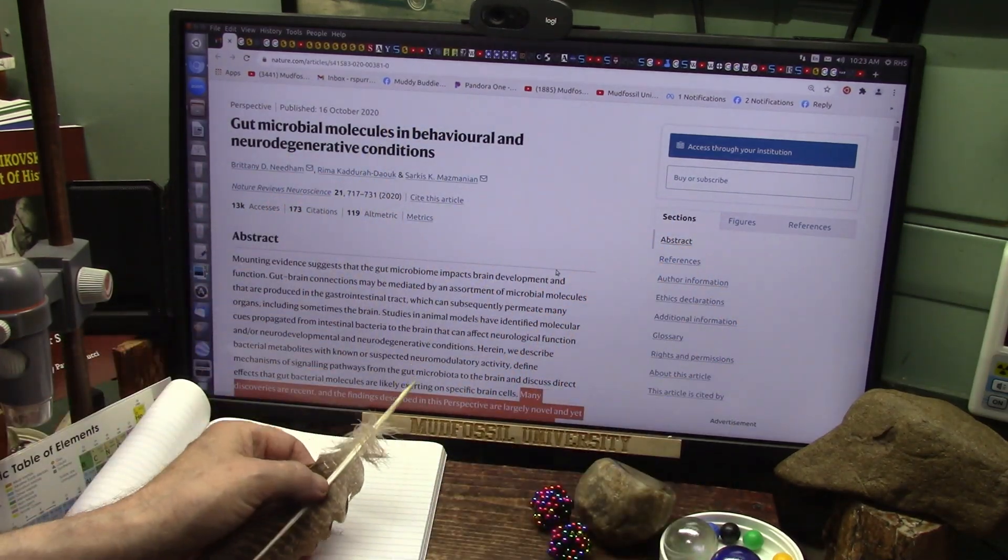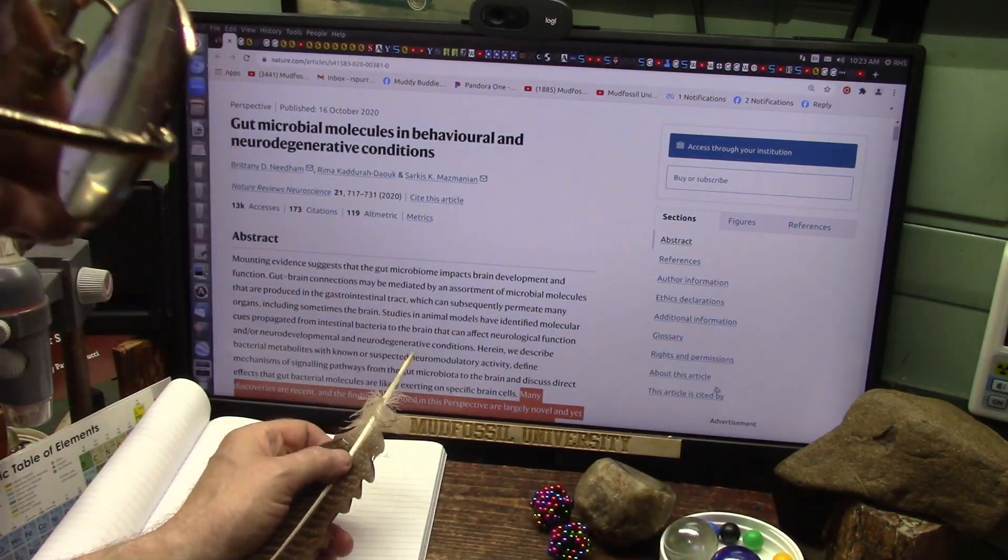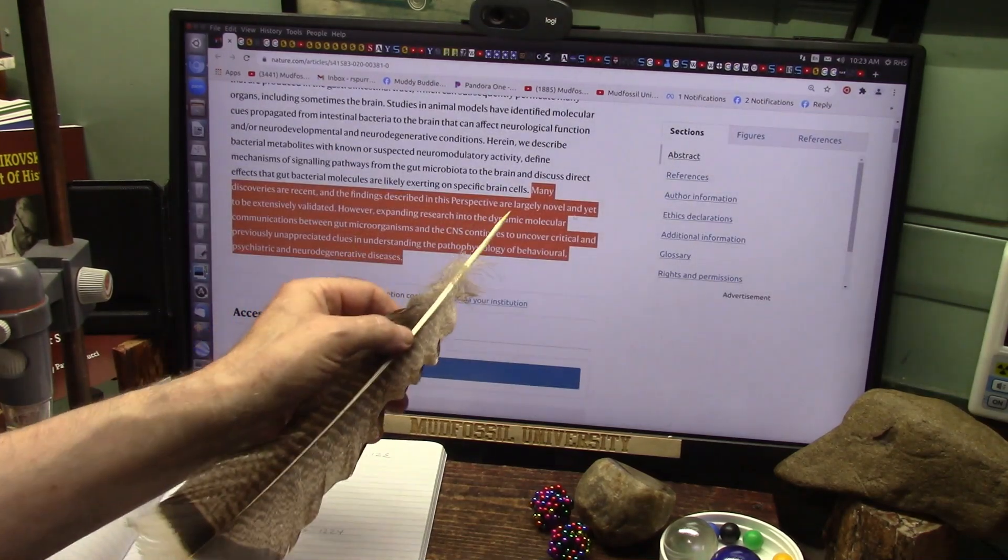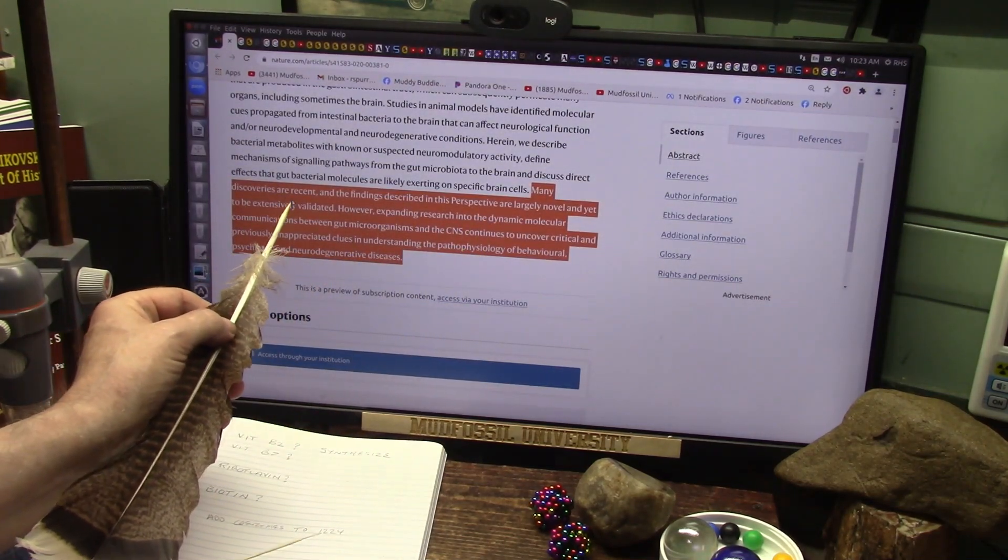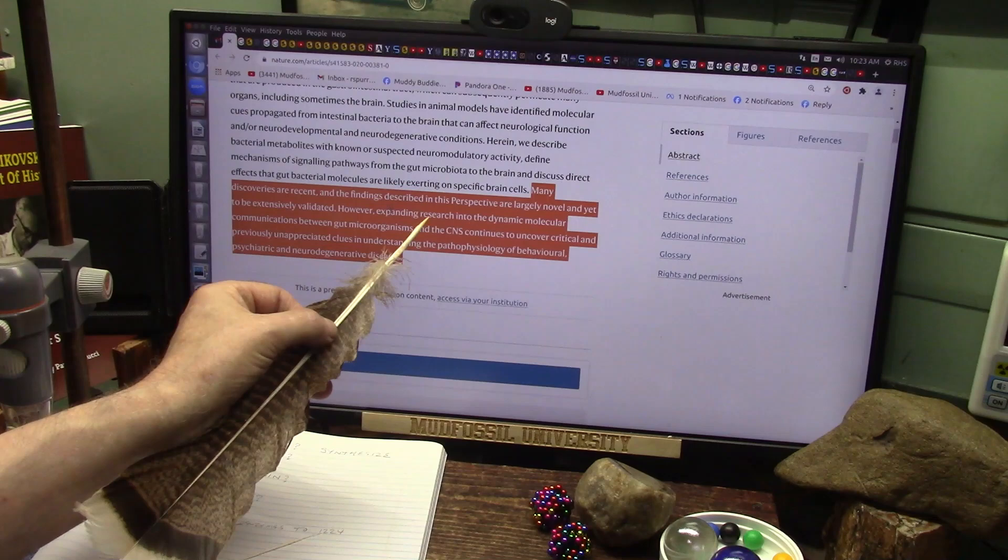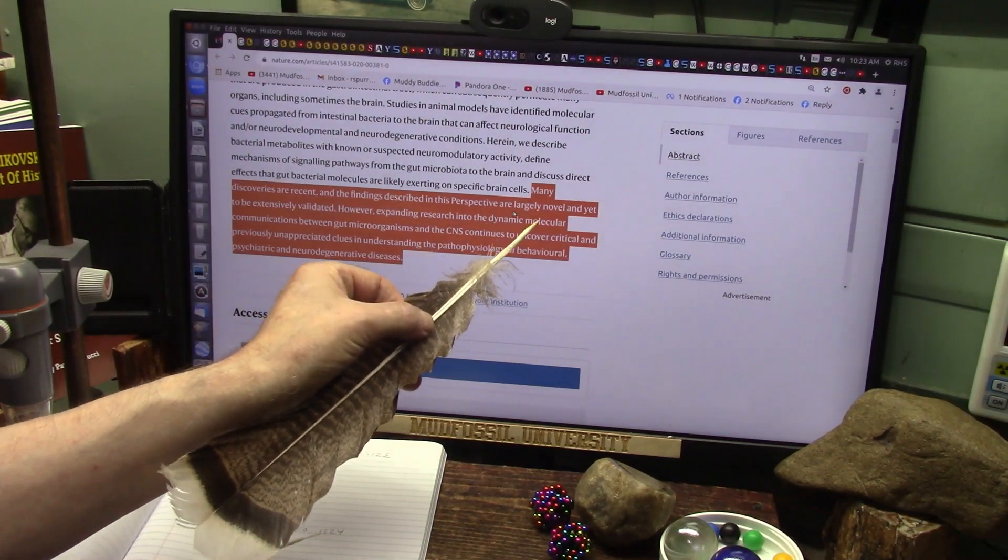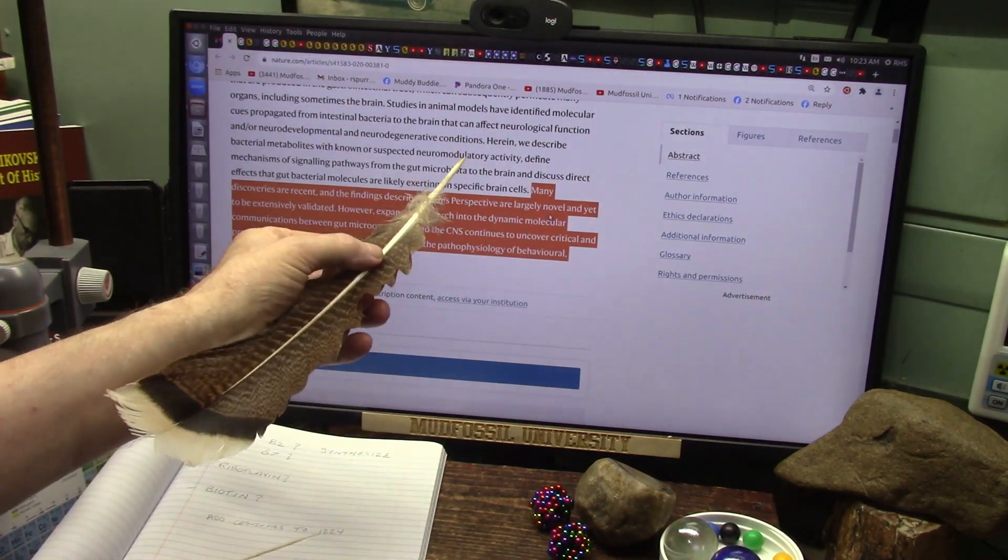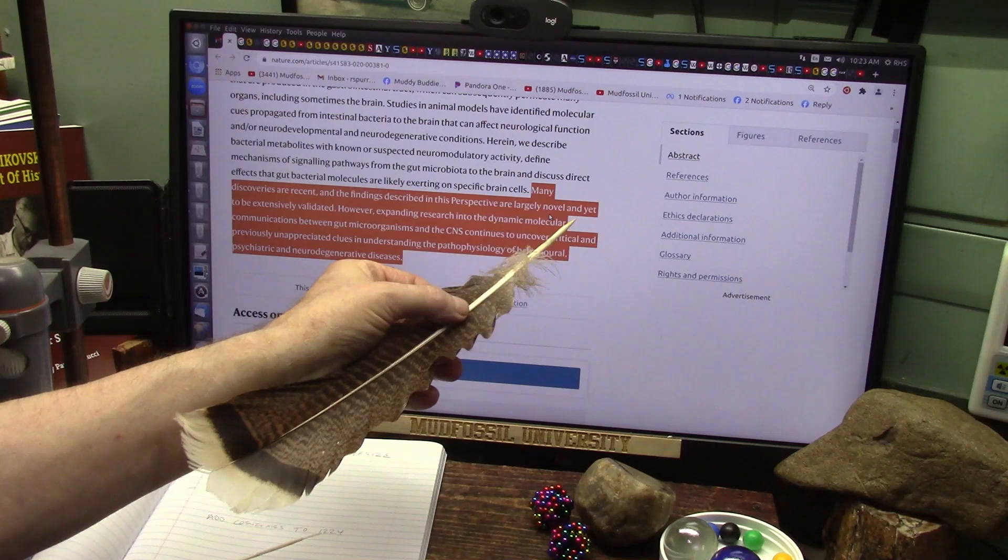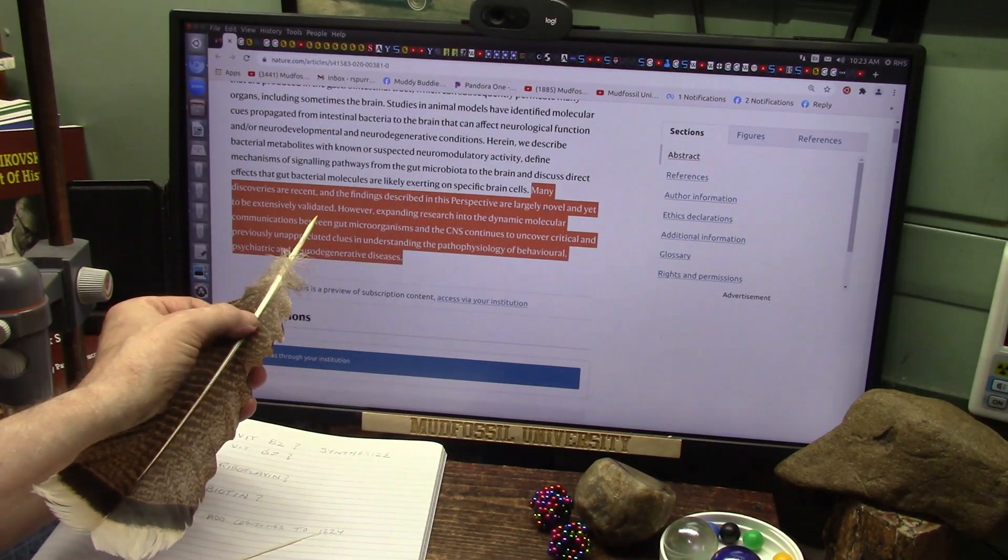Where the nerve is supposed to send a signal it doesn't work. Now then, they have never known about this particular membrane layer. It says many discoveries are recent and the findings described in the perspective are largely novel, new and unknown before, and yet to be extensively validated.